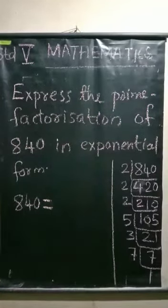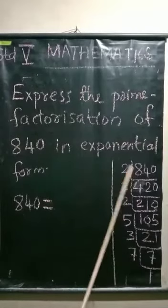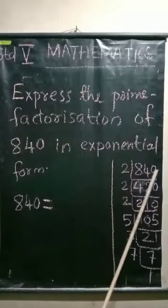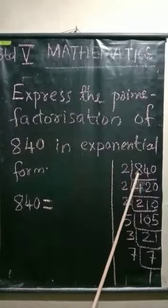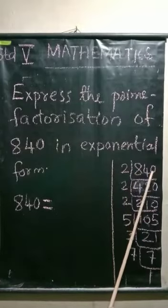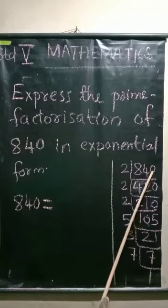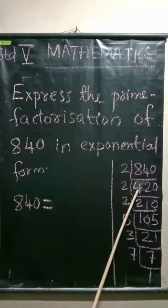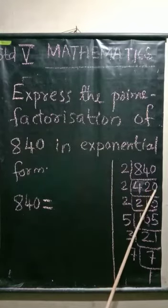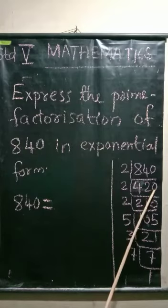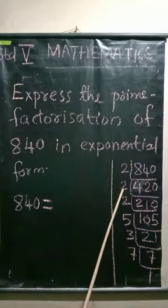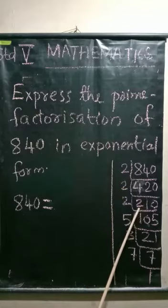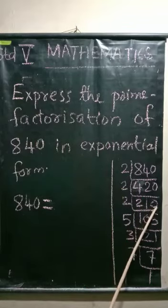Find the prime factorization of 840 by the division method. 840 — its unit's digit is 0, so we can divide it by 2 and get the number 420. Again, its unit's digit is 0, so divide it by 2 and get the number 210.